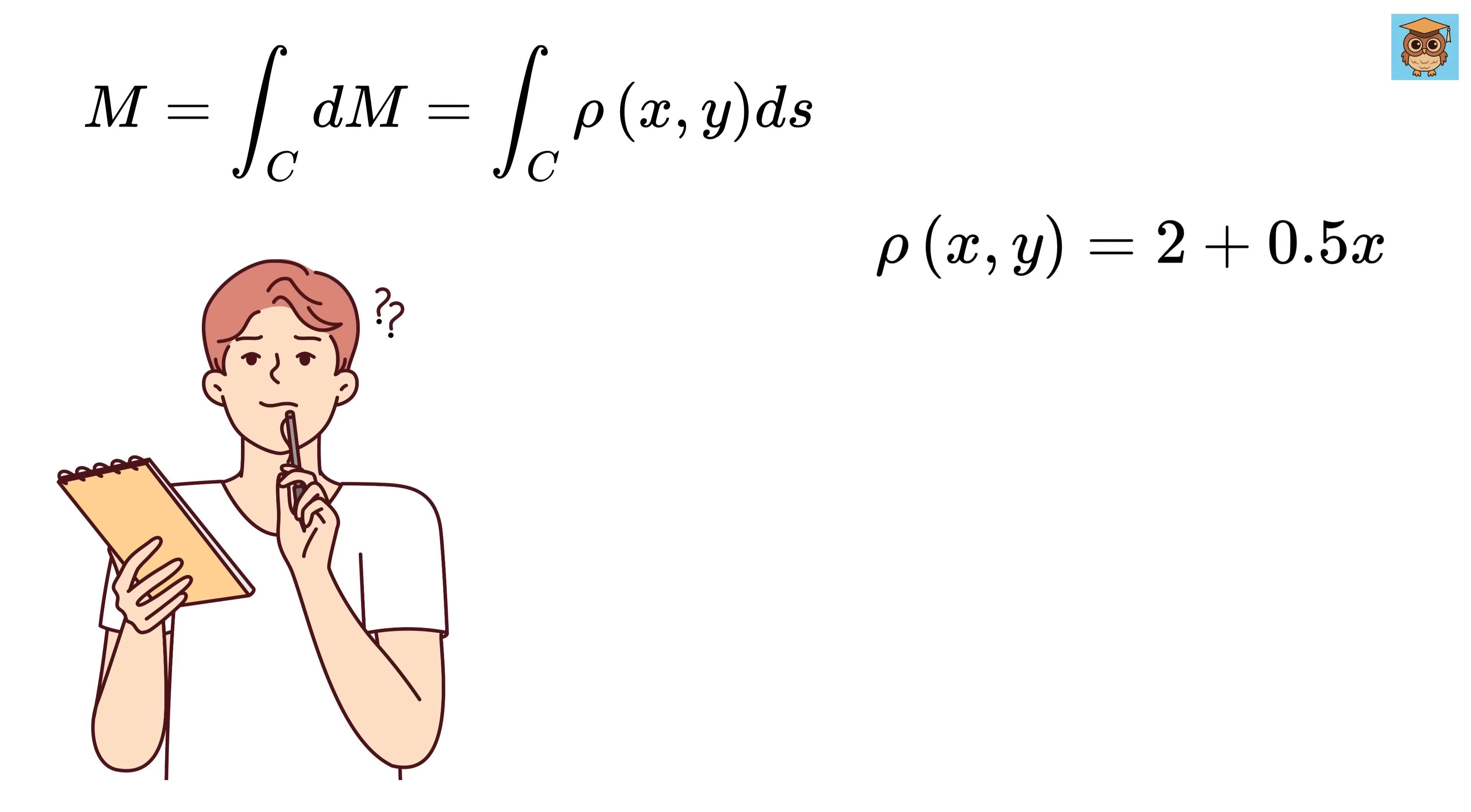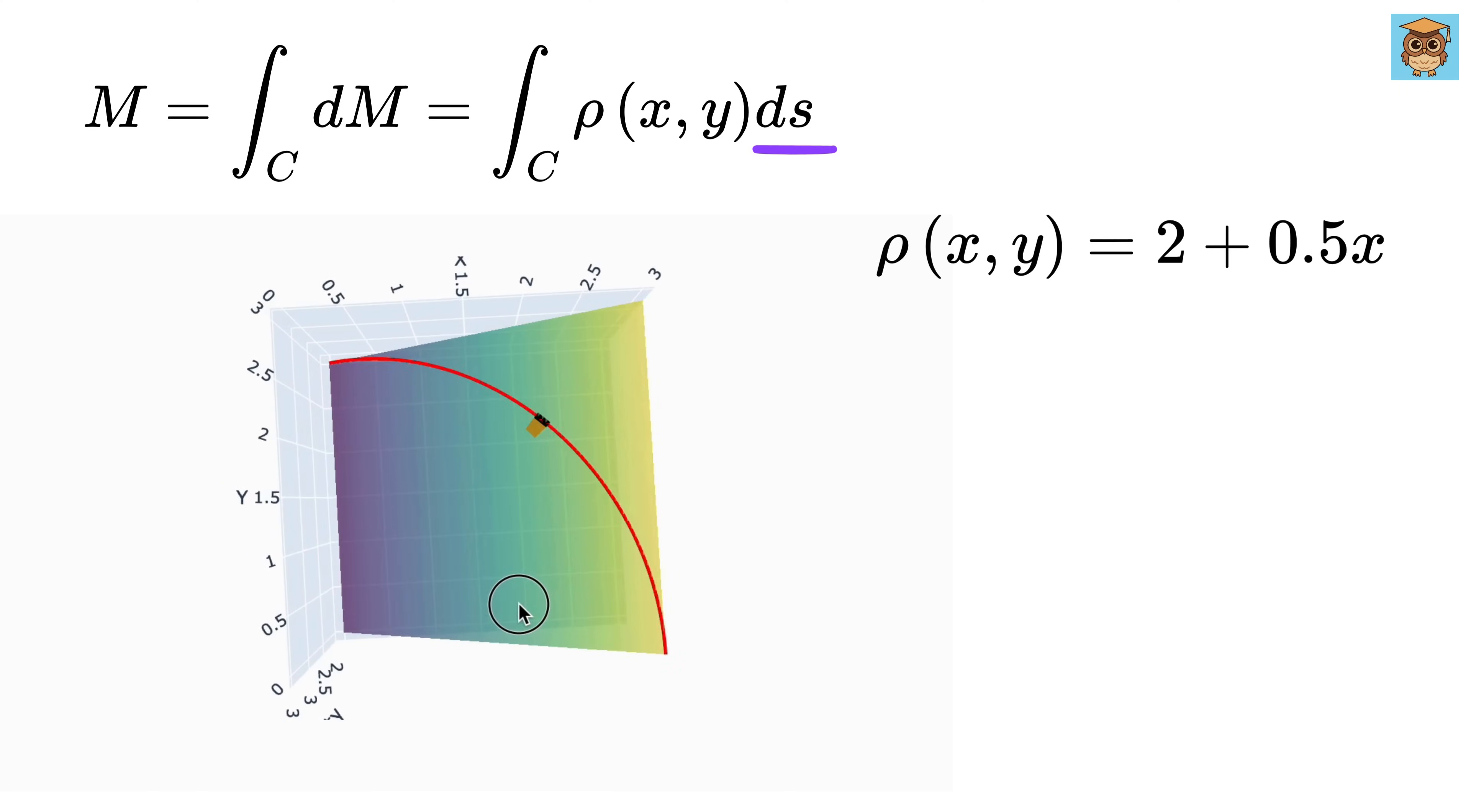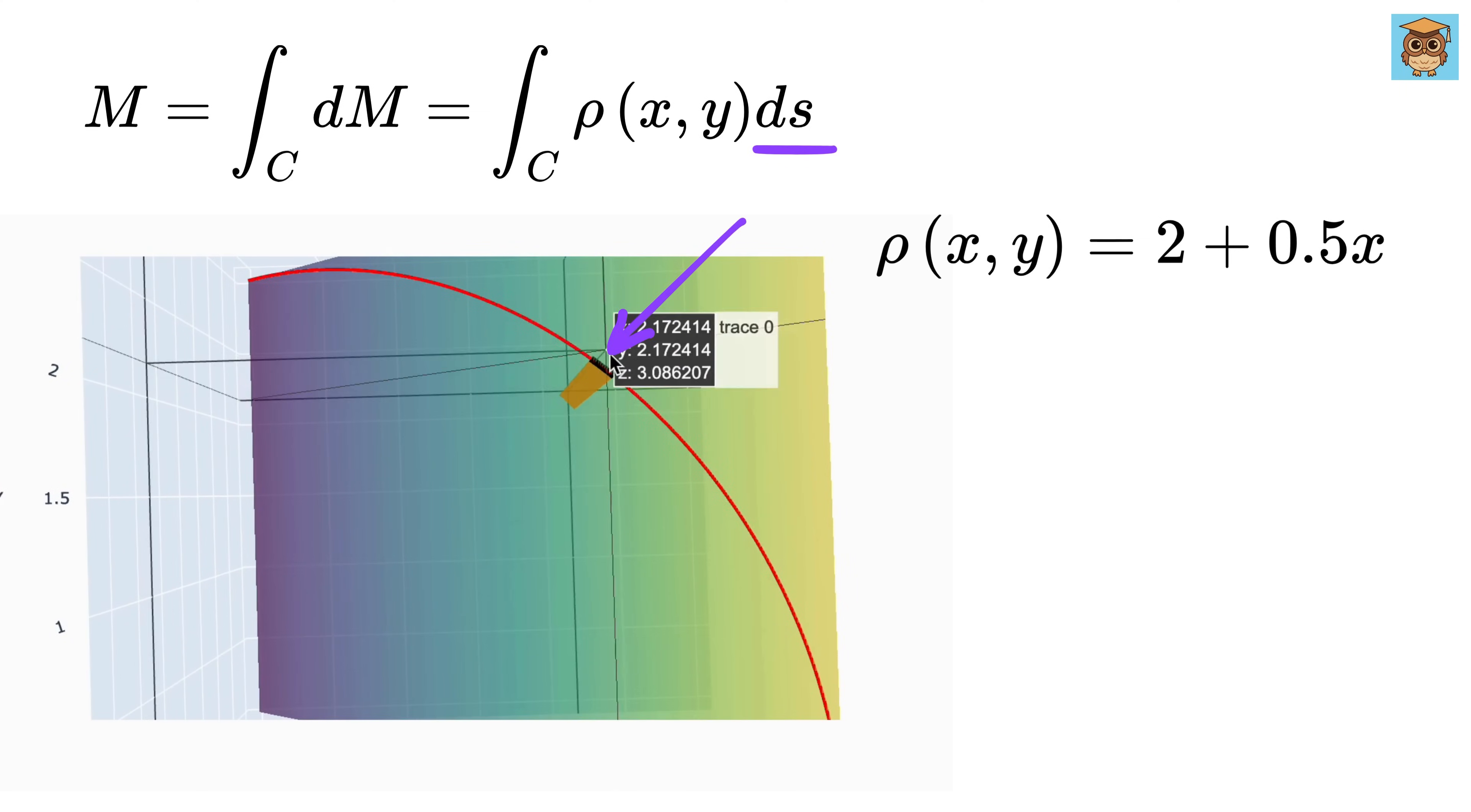But wait, now you might ask, what exactly is ds? Good question. ds is the length of this small piece of the wire along the curve, or the length of this black arc on this curve. And how do we compute it? Look carefully.